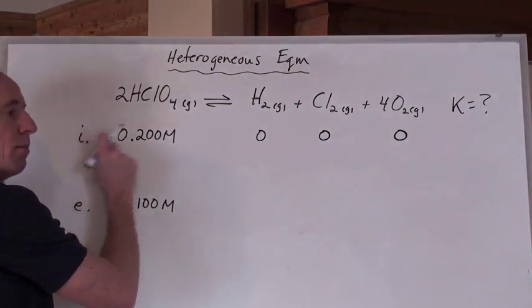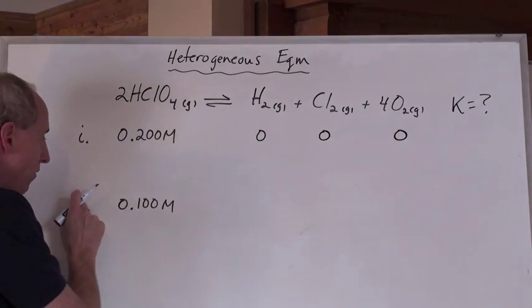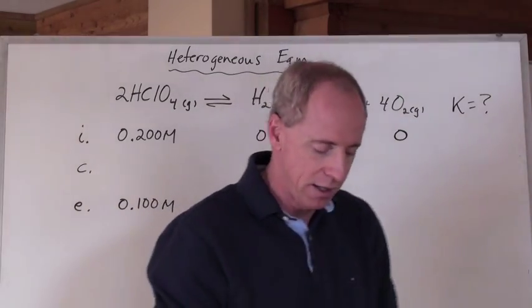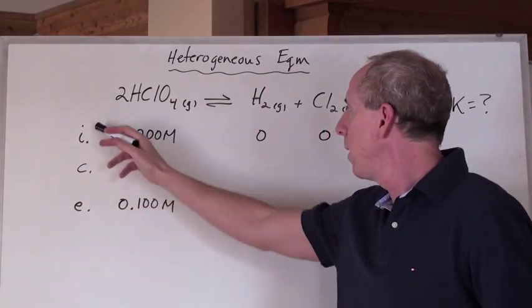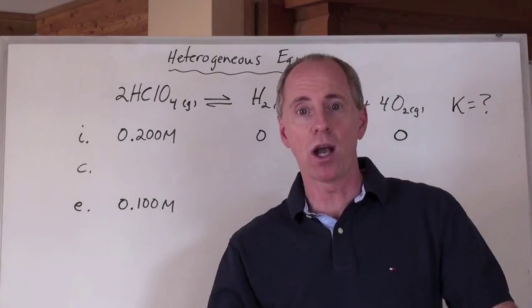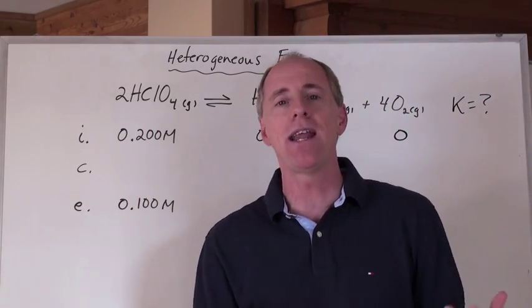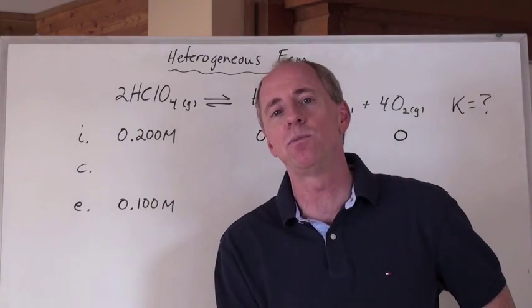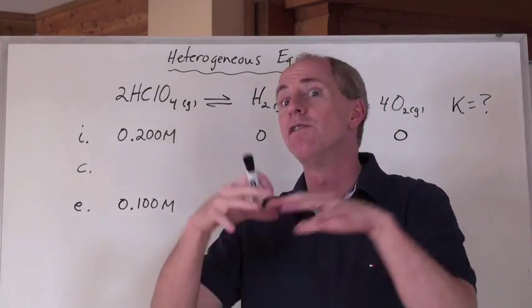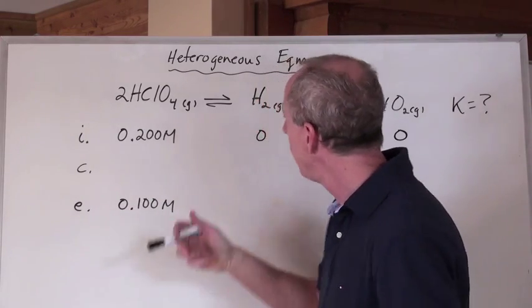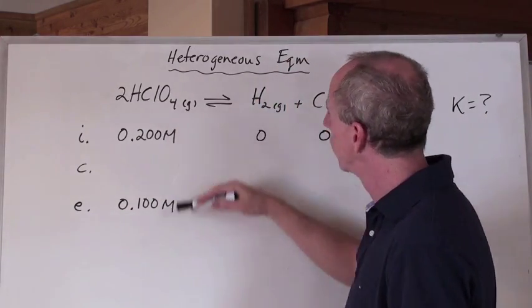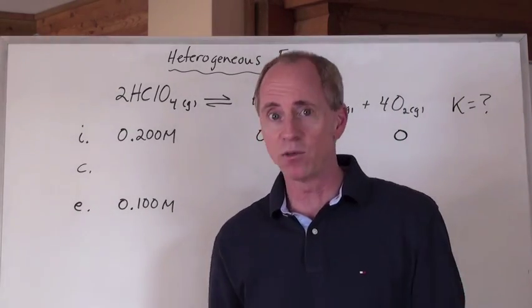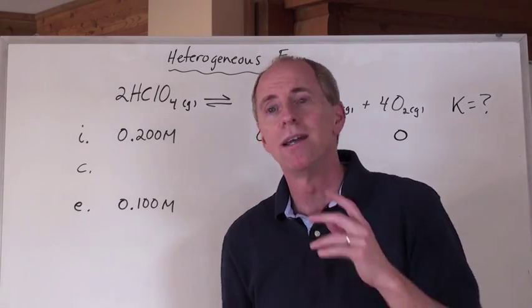You have an initial line, which is why I put an I there. And then we have an equilibrium line here, but in the middle of the two, we have a C for a change line. So here's what we're doing. We are making something called an icebox. That's what it's called, an icebox. And it's a great name. Initial change equilibrium. And what we're going to do in this icebox is we're going to then devise an entire table here of ideas.